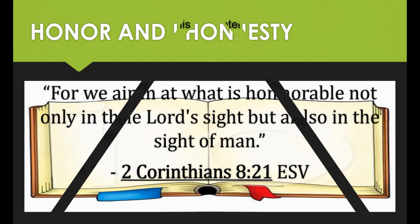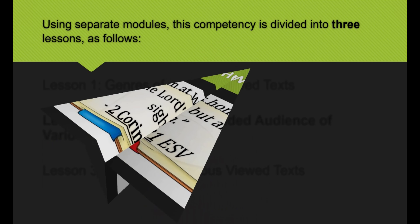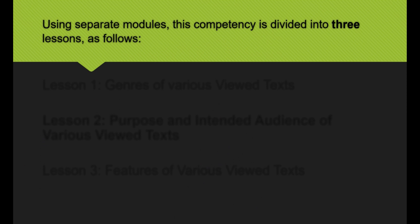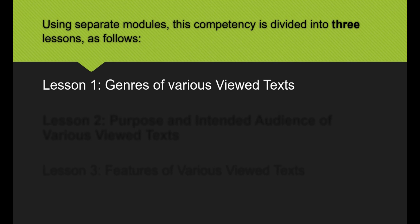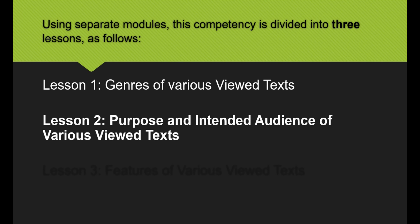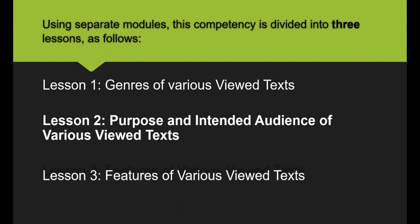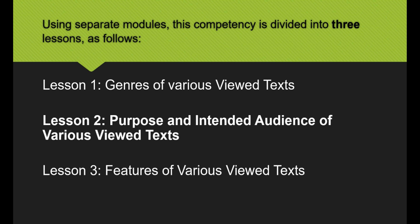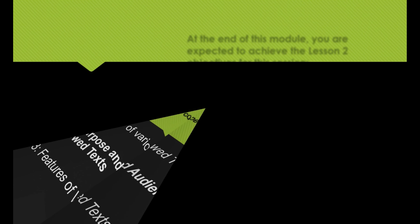So for module 2, it is divided into three related lessons. Namely, lesson 1: genres of various view text. Lesson 2: purpose and intended audience of various view text. Lesson 3: features of various view text. So for this week, we will be tackling lesson 2.